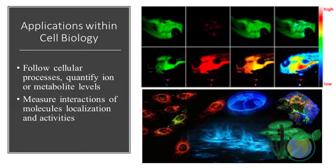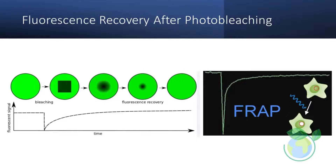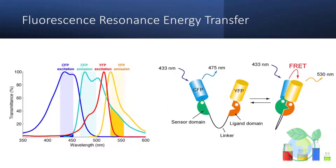In cell biology, bioimaging can be used to follow cellular processes, quantify ion or metabolite levels, and measure interactions of molecules live where they happen. Appropriate tracers such as specific fluorochromes and advanced microscopic instruments such as the confocal laser scanning microscope, or CLSM, are prerequisite for most applications. Recent developments include super resolution, two-photon fluorescence excitation microscopy, FRAP, and FRET.